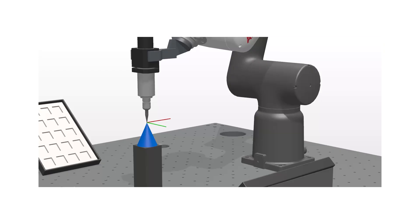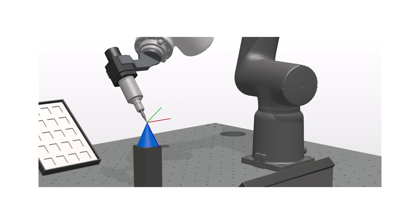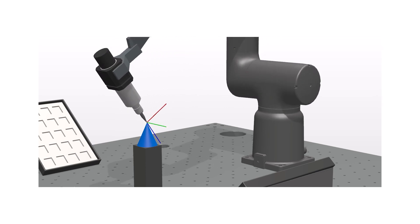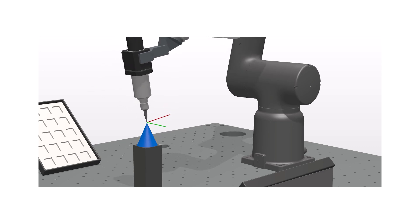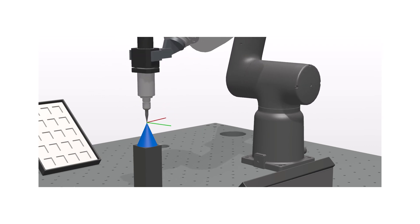We now know that the tool coordinate system is aligned to a position. Let's see another example on why we need a tool coordinate system. Here, the robot performs an operation called reorienting. In the coordinate system, there is a zero point where the X, Y, Z directions cross. This zero point is called TCP — tool center point.